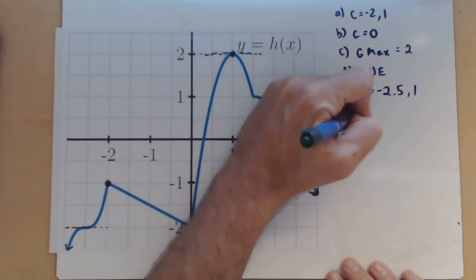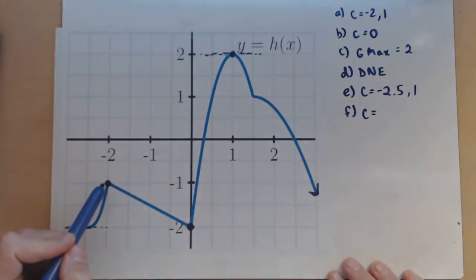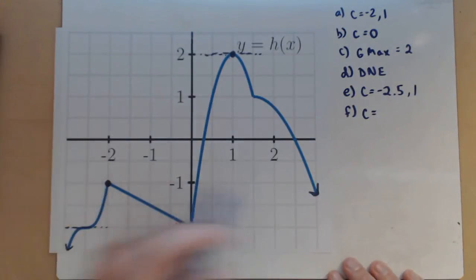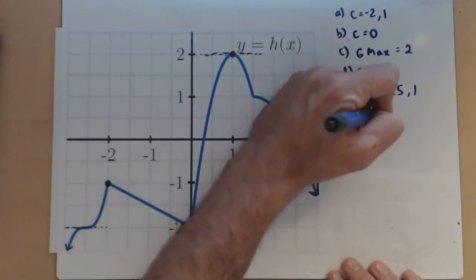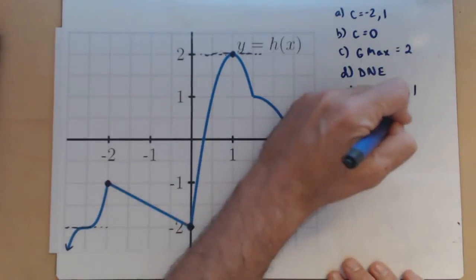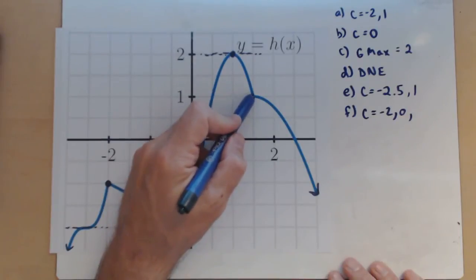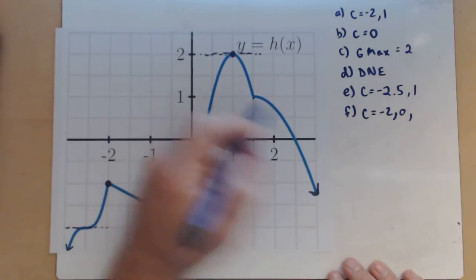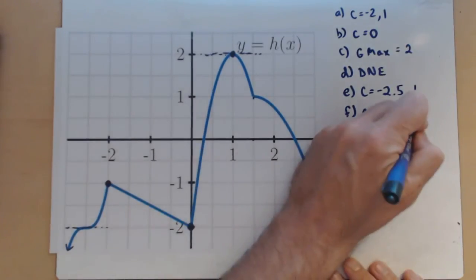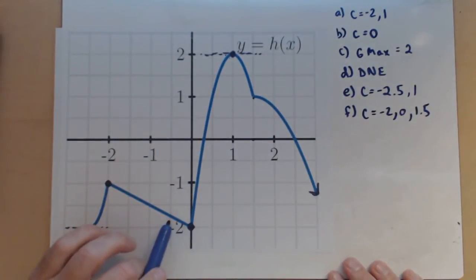F: determine all the points where the derivative does not exist. We have one at negative 2 — you can see the corner point. We have one at 0, and there is one other corner point right here; it looks like it's at 1.5. So those are all inputs where the derivative of this function h is not going to exist.